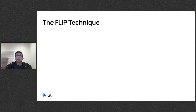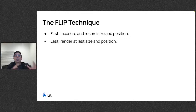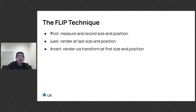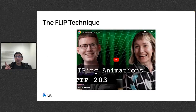Under the covers, we use what's called the FLIP technique, a term coined by Paul Lewis. It stands for First, Last, Invert, and Play. First, you measure and record the element's current size and position. Then you render it where you want it to go with CSS. You record that position, invert it back to the first position with CSS transform, then play an animation that undoes that. There's a recent YouTube video by Jake Archibald and Cassie Evans that goes into great detail about it.